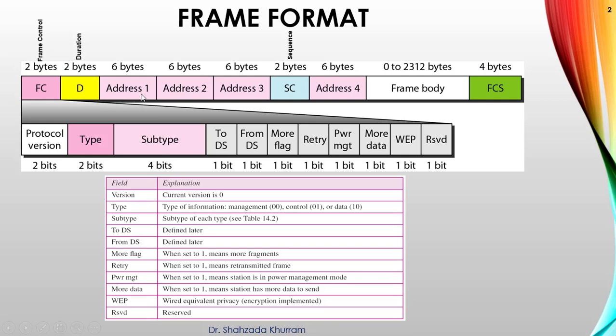Then address one, it's a six bytes address. One thing remember, all the addresses are in MAC address because it's working on layer 2. Second address is destination MAC address and third is source MAC address. And then SC SE for sequence, sequence basically used for frame fragmentation or frame sequencing.